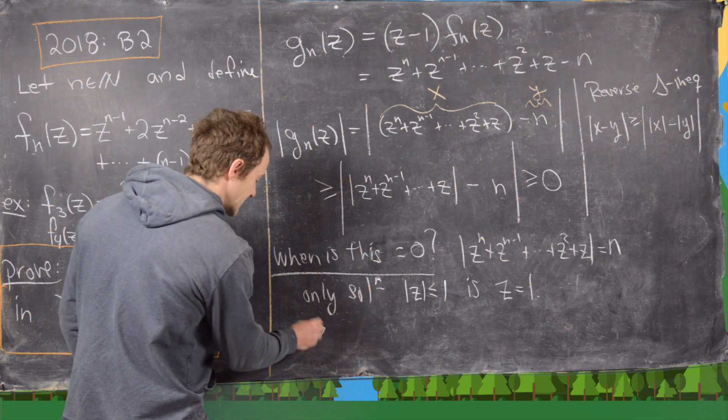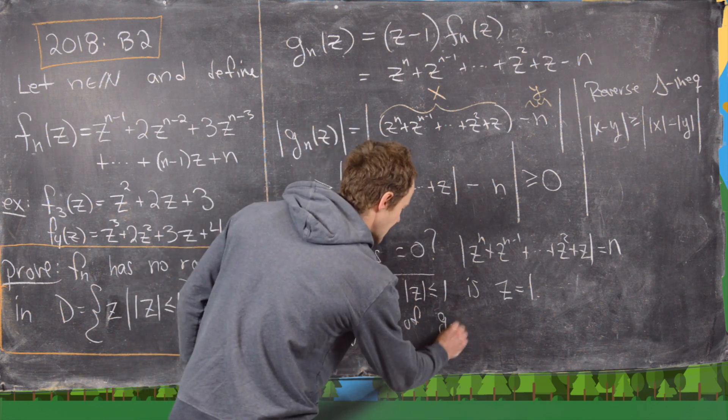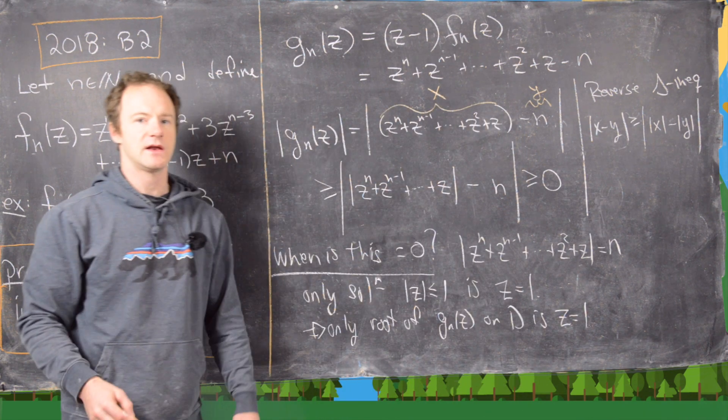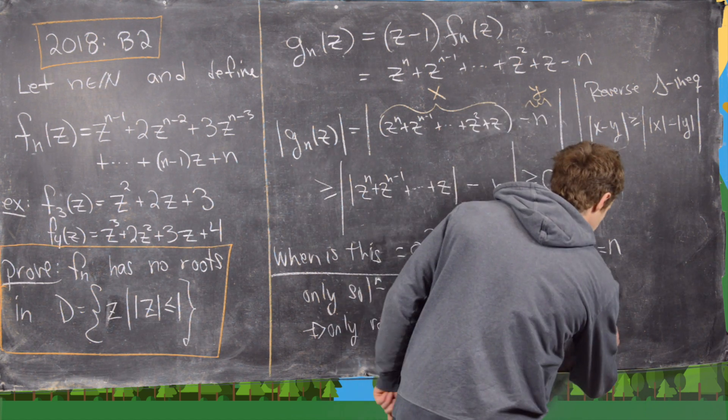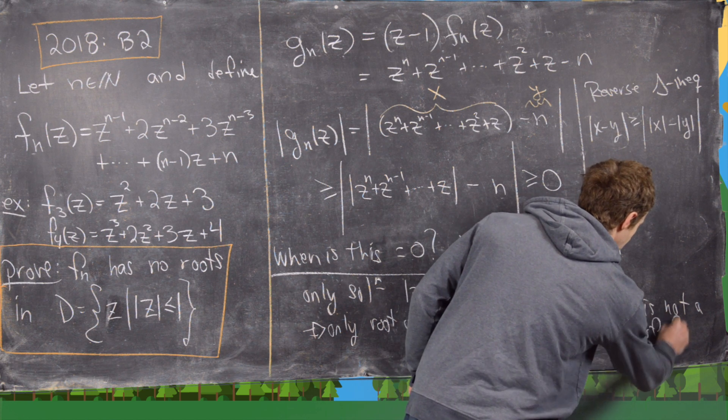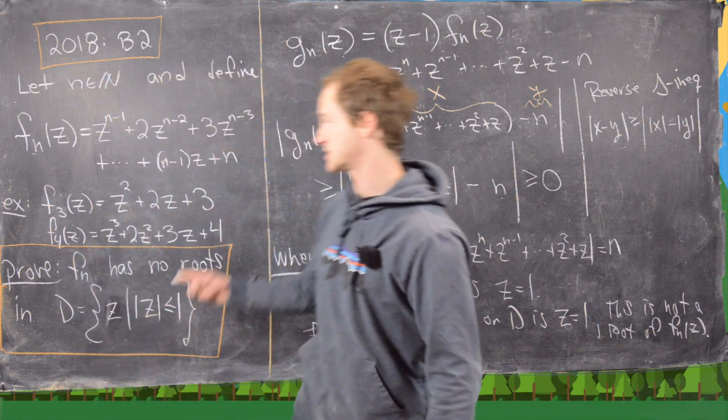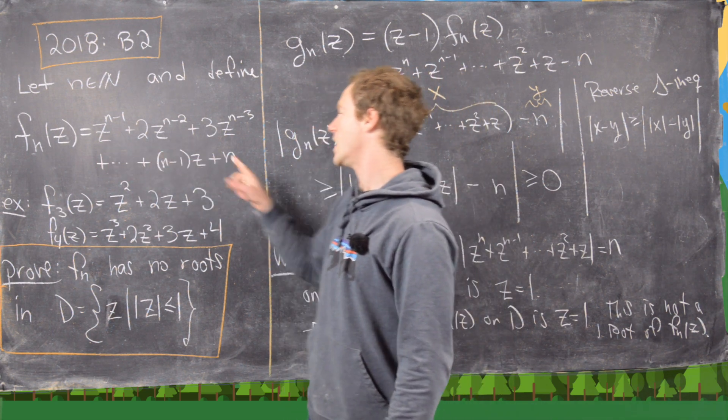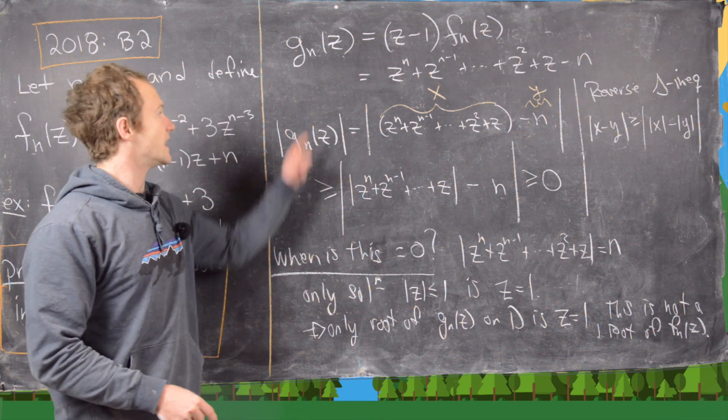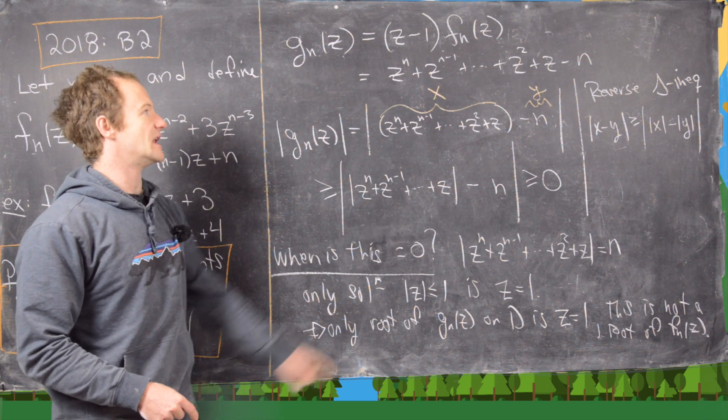Great! So what that tells us is that the only root of gn(z) on D is the root z equals 1, but this is not a root of fn(z). That's actually pretty easy to check. You can just plug 1 into this and notice you get the sum 1, 2, 3, all the way up to n, which is obviously not zero.